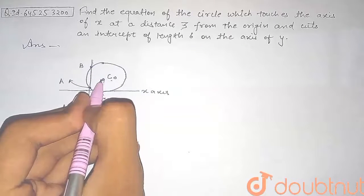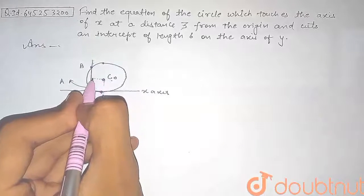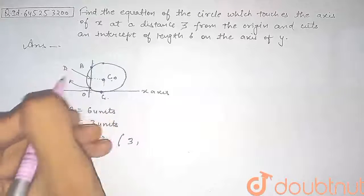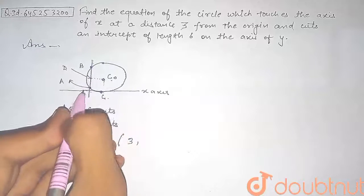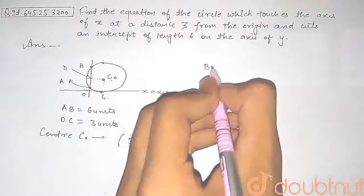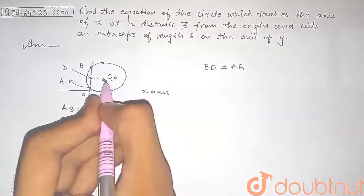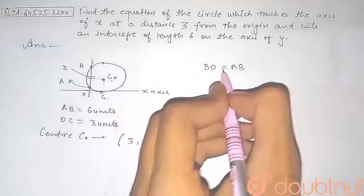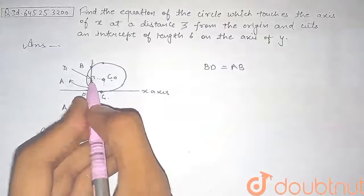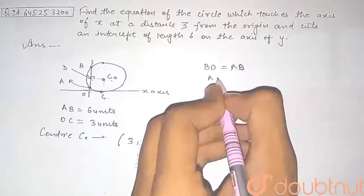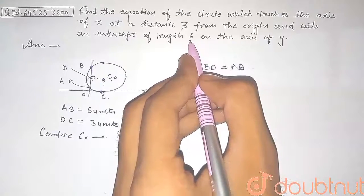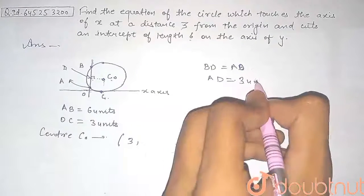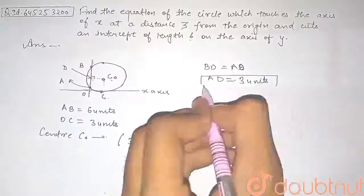We draw a perpendicular from C₀ onto the chord AB, and name the foot of the perpendicular as point D. Since the perpendicular drawn from the center bisects the chord, BD equals AD. The whole length AB is 6, so AD equals half of 6, which is 3 units.